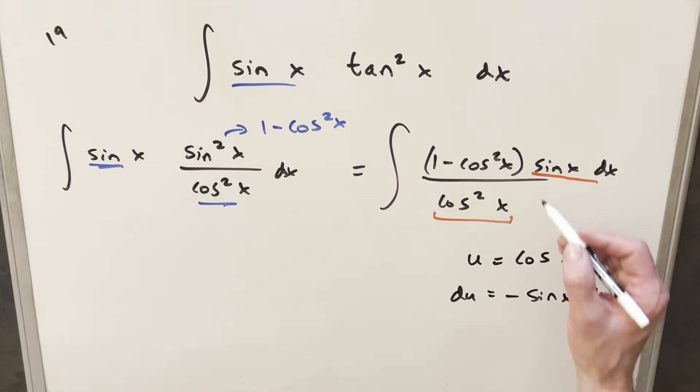So let's just rewrite everything. We'll have our cosine squared x here. We'll write this as 1 minus cosine squared x, and let's just bring over this sine x over here.